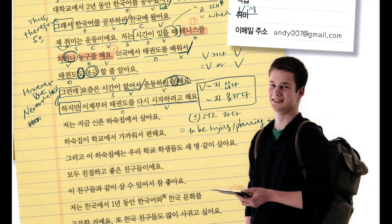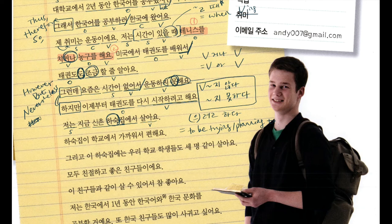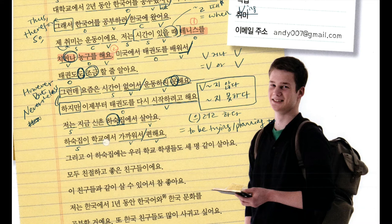저는 지금 신촌 하숙집에서 살아요. I live at 신촌 하숙집 right now. 하숙집 means 'boarding house' — this is a particularly Korean way of living for university or high school students. The landlord provides meals and laundry service; basically, mother-like services are all included. And it's located in 신촌. 하숙집이 학교에서 가까워서 편해요. Divided into two — the main clause is 편해요, it is comfortable. Why? Because 하숙집이 학교에서 가까워서 — the boarding house is close from school.